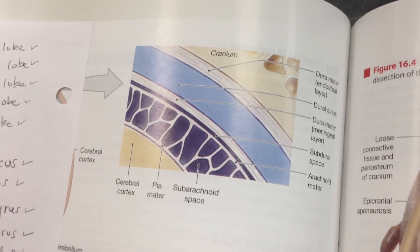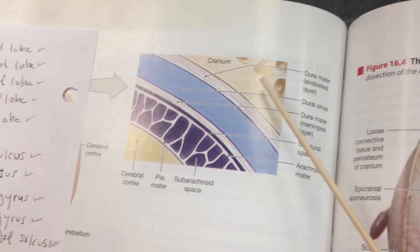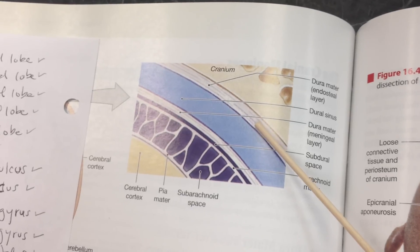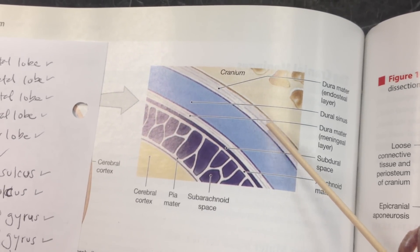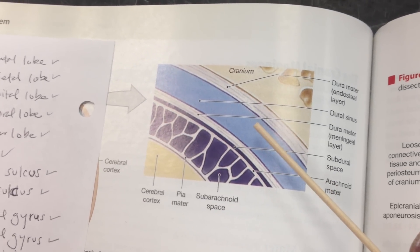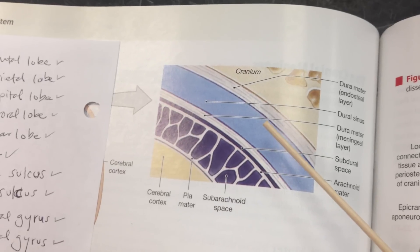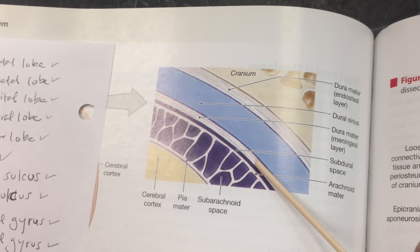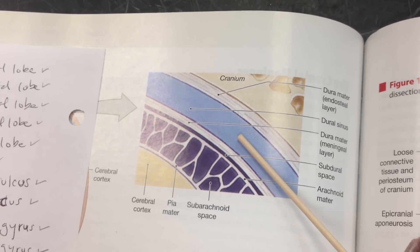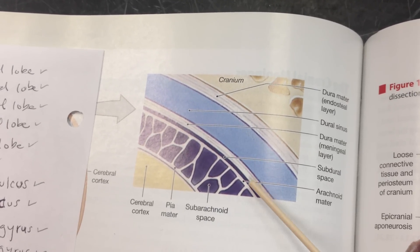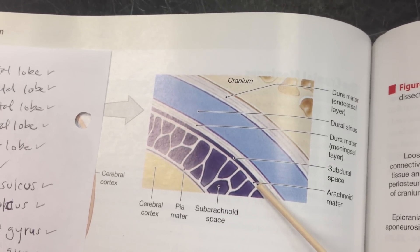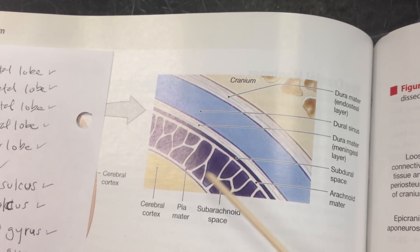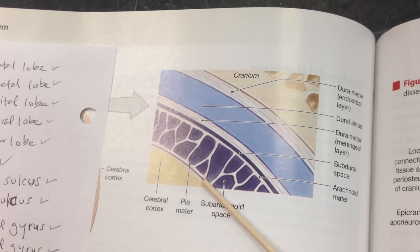These are the cranial meninges. We have the cranium first, and then the dura mater endosteal layer, and then the dura mater meningeal layer, and then in here is the dural sinus. And then this is the subdural space, and then the arachnoid mater, the subarachnoid space, and then the pia mater.